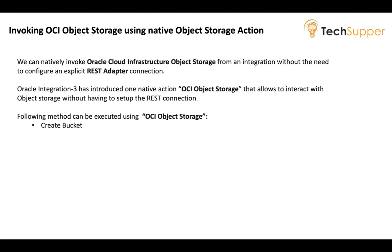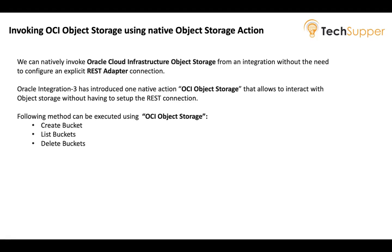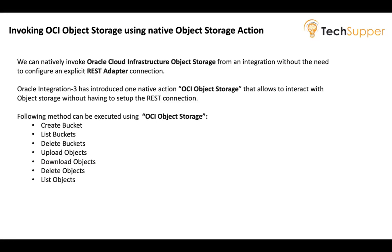With OCI object storage, we can perform various operations at the bucket level as well as the object level. At the bucket level, we can create buckets, list buckets, and delete buckets. At the object level, we can upload objects, download objects, delete objects, and list objects. These are the functions we can perform with the OCI object storage action.